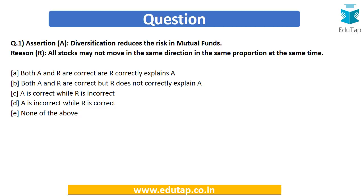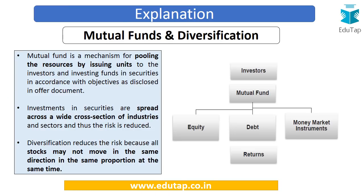To answer this question, we must understand diversification in the context of mutual funds. A mutual fund is a mechanism for pooling resources — investors come together, put in their money, and this money is invested as per the fund's objectives to earn returns. When a mutual fund invests, it does not put all the money in a single set of securities; rather, it invests across different sectors, industries, equity, debt, and money market instruments.